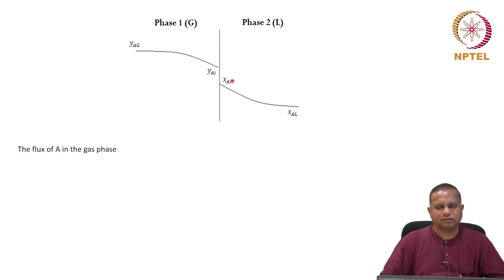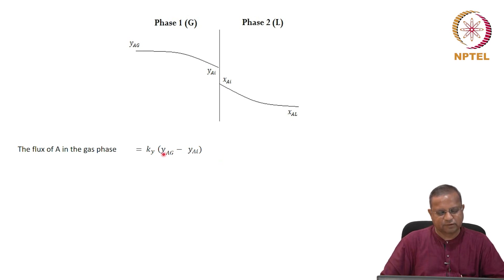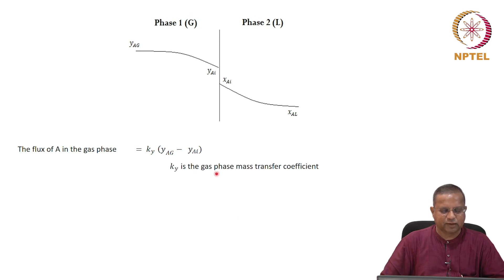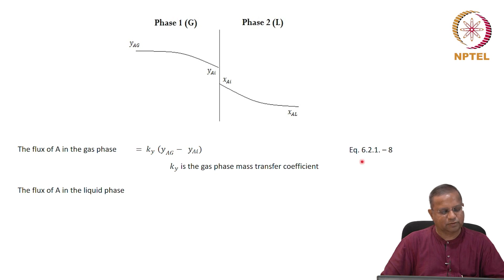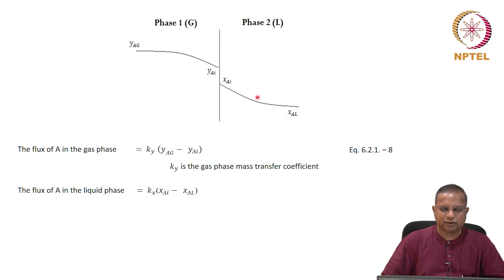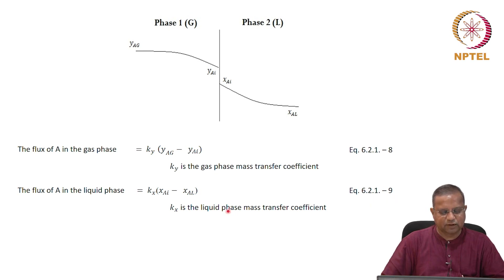The flux of A in the gas phase is the gas-side coefficient ky times yag minus yai — equation 6.2.1-8. This is the mass transfer coefficient times the mole fraction difference; ky is the gas phase mass transfer coefficient. The flux of A in the liquid phase is kx — the individual mass transfer coefficient on that side — times the concentration difference xai minus xal — equation 6.2.1-9. kx is the liquid phase mass transfer coefficient.